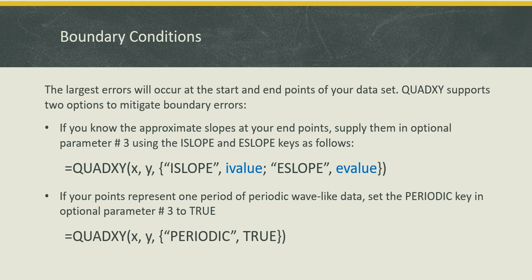One thing is if you know the slopes at the end points you can supply them using the keys I slope and E slope exactly as I show in this formula here. You would estimate the I value and E value and put these numbers in there. The other thing is if you know that your data points come from a periodic wave-like data, then you can set the periodic key in optional parameter 3 to true as I also show here, and that will take care of your boundary conditions.